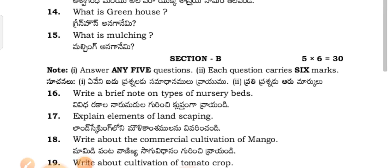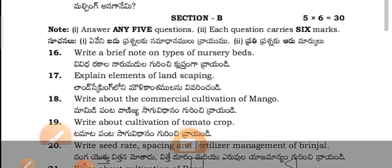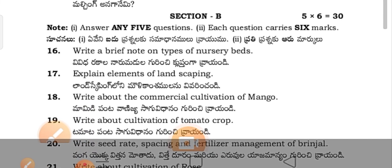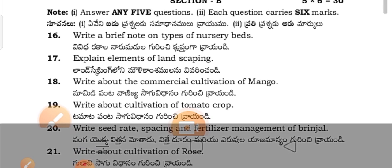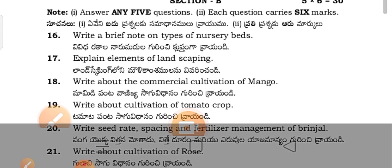Write the botanical name of Ashwagandha and Aloe vera. What is a greenhouse? What is mulching? Section B questions: write brief notes on types of nursery beds and explain elements of landscaping.